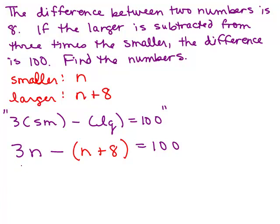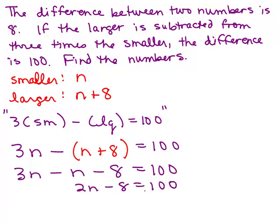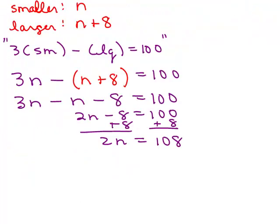Be very careful that you put anything that has more than one term, put it in parentheses. Now, we need to do the distributive property with that minus sign. So I have 3n minus n and minus 8 equals 100. And then we're ready to go. So 2n minus 8 is 100, add 8 to both sides, so 2n equals 108. And if we divide both sides by 2, we get n equals 54.